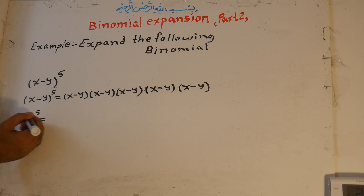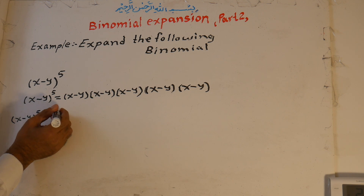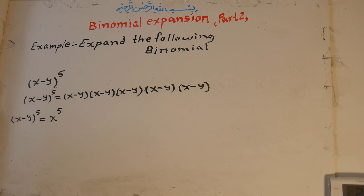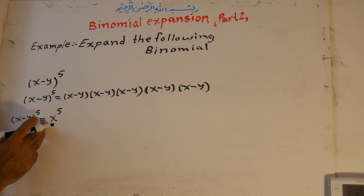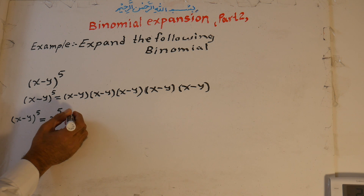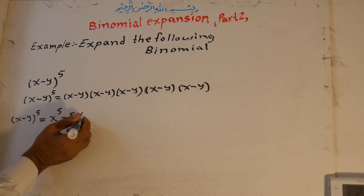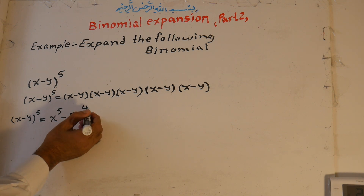For the first term, the power of the binomial is 5. We multiply this exponent by the coefficient of the first term, which is 1, giving 5. Divided by the term number 1, that is 5. So we have x to the power of 5, then minus 5x to the power of 4, and y to the power of 1.